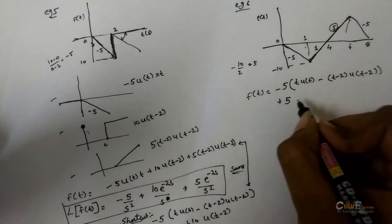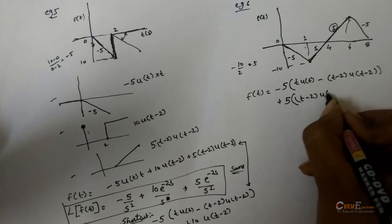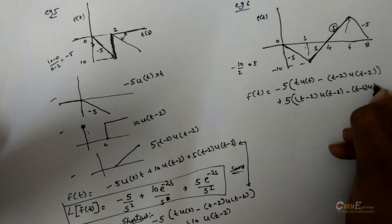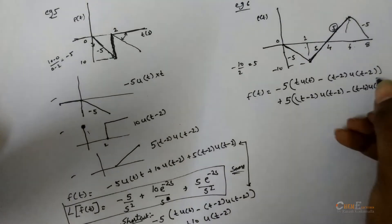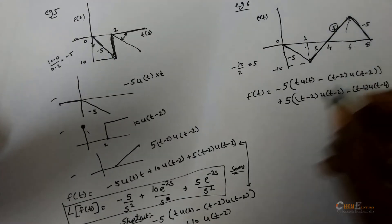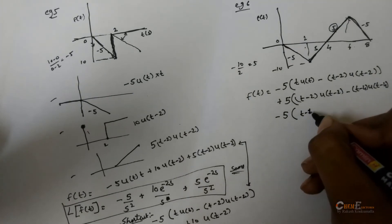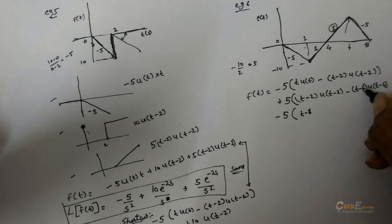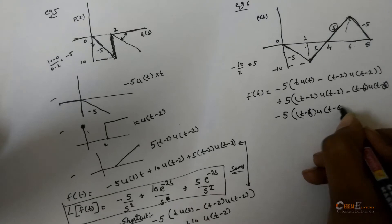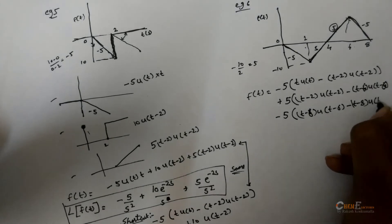Plus, there is an increment. Plus 5, t minus 2, u, minus t minus 4, u. Then, again, there is a decrement with a slope minus 5. Minus 5, t minus 6, u, minus t minus 8, u.